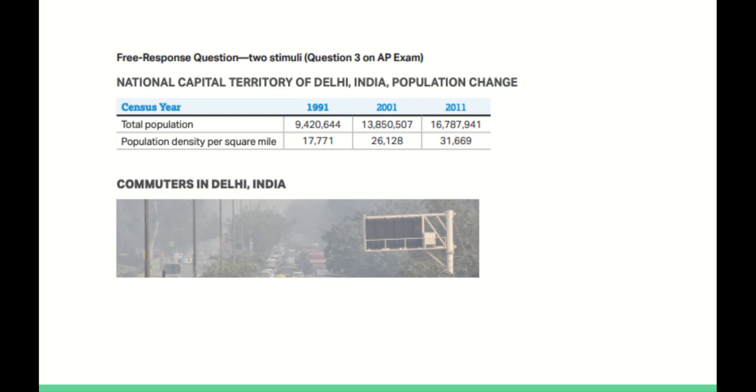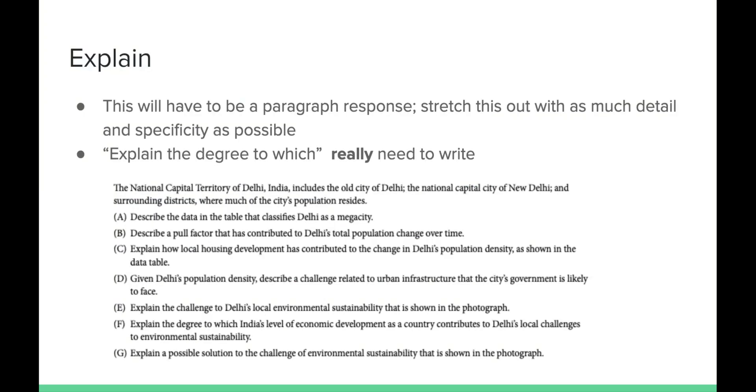When you're doing an explain, remember that you're having to stretch this out as much as possible with as many details as possible. And that term I keep using, which is specificity, you're using vocabulary terms here. You're defining those vocabulary terms. You really, really need to write. And especially if you see a degree prompt that says, like part F here, explain the degree to which - this is where you're really, really demonstrating your knowledge of a particular region and of course of concepts, because this is asking you to combine several different things here: economic development, so levels of economic activity, which of course they're going to be in secondary manufacturing, along with sustainability. This is actually quite a challenging FRQ prompt on part F here, because they're asking you to combine several different items into just part F. So just make sure that when you see explain the degree to which, you're writing your heart out.